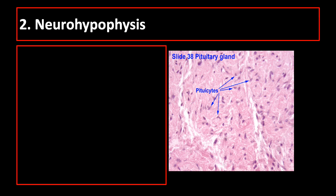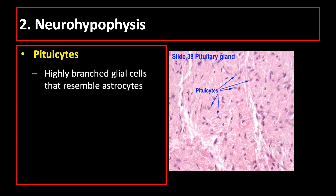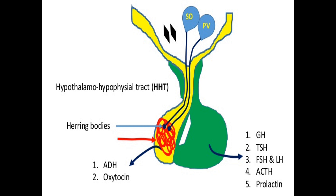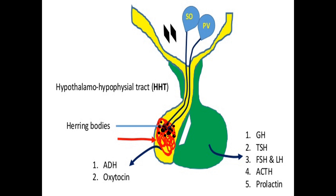The neurohypophysis contains cells called pituicytes, which are highly branched glial cells that resemble astrocytes and are the most abundant cell type in the neurohypophysis. The supraoptic nucleus synthesizes antidiuretic hormone or vasopressin, and the paraventricular nucleus synthesizes oxytocin. These two hormones are transported axonally into the pars nervosa and accumulate in axonal dilatations called neurosecretory bodies or Herring bodies.